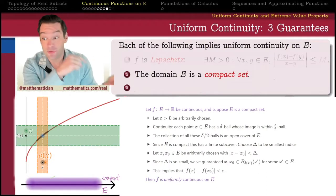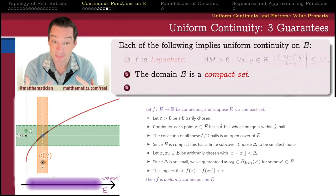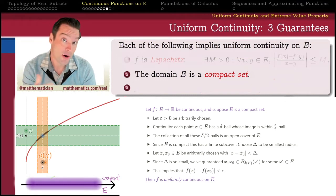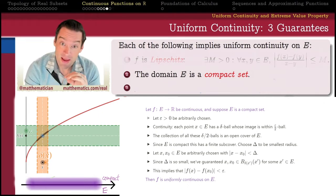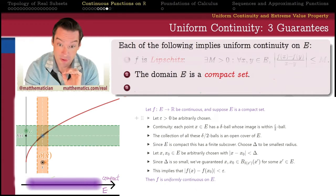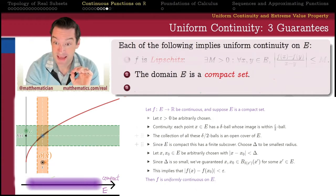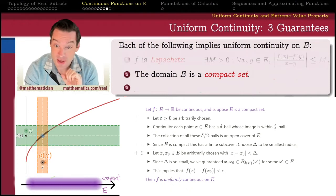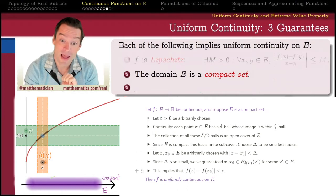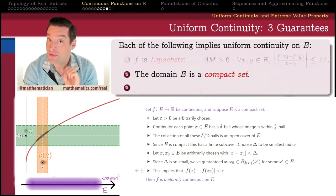I've outlined the main steps in the argument, and I want to talk through those first to get an overview. Our burden of proof is to show that for an arbitrarily chosen epsilon greater than zero, we can find a delta — I'm going to call it capital delta here to distinguish it from the other little deltas we meet along the way — such that all points in my domain that are capital delta close to one another will have images that are epsilon close to one another.